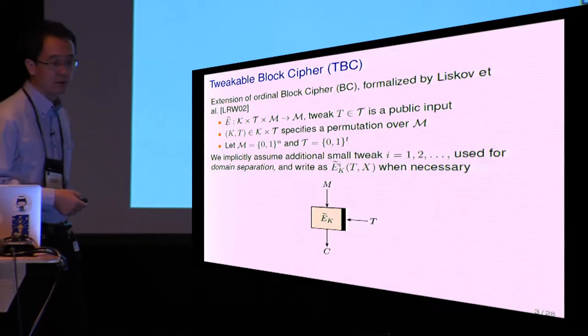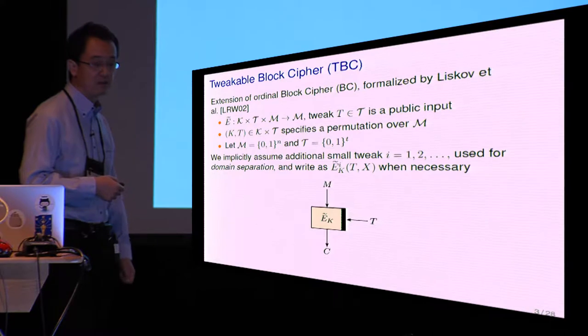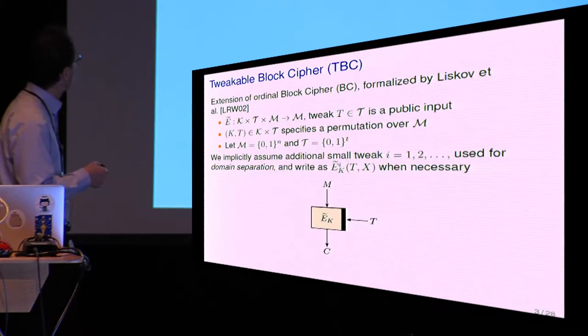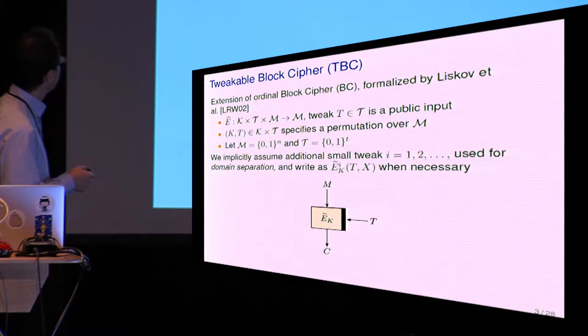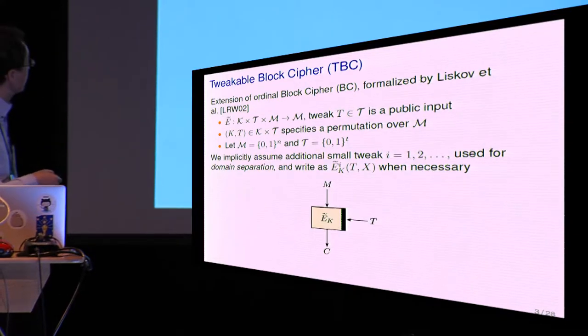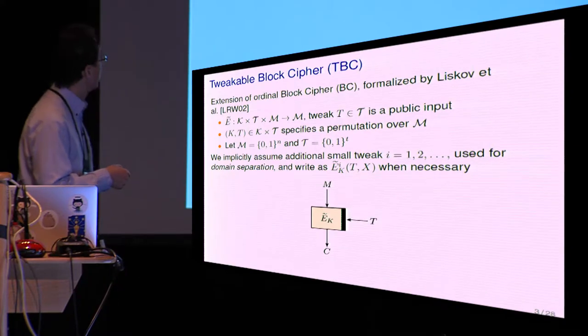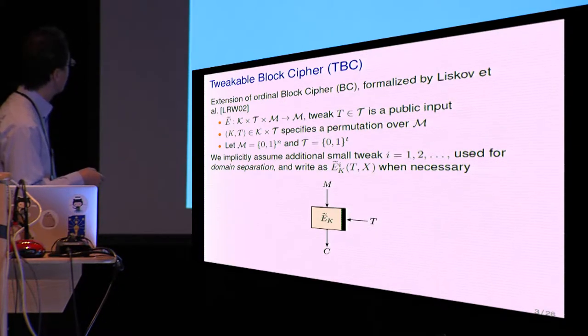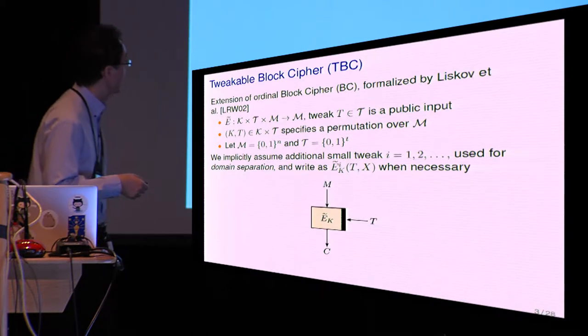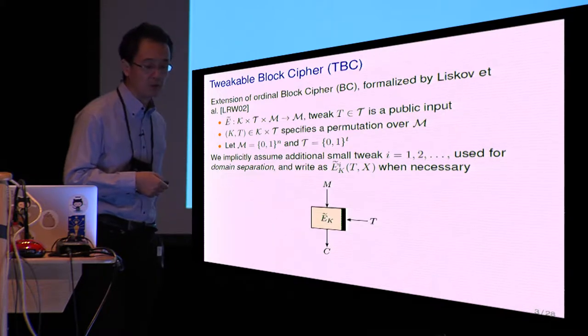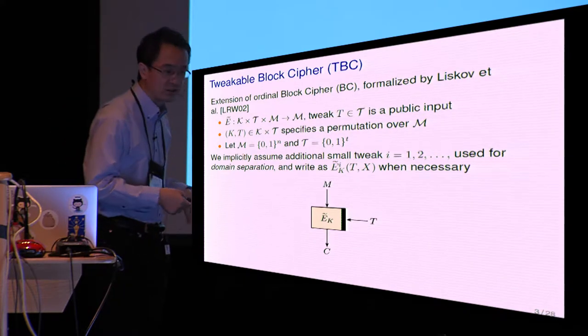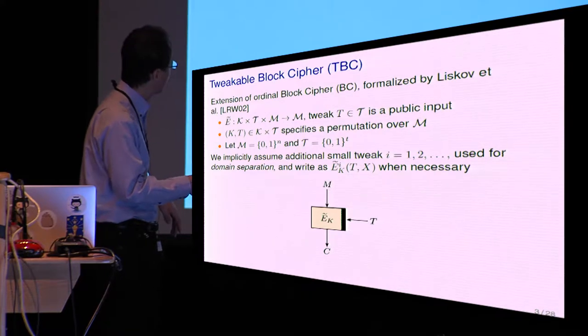The main component of our construction is the tweakable block cipher, TBC, which is an extension of the ordinary block cipher introduced by Liskov et al. in 2002. The difference from the ordinary block cipher is that there is an additional input called the tweak, which is public, which can be public, and the pair of the key and the tweak specify the permutation over the message space.